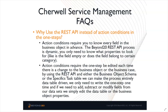At a recent ShareWell user group meeting, we encountered some frequently asked questions for this M App. The first question was: why use the REST API instead of action conditions in one-steps? Our answer is simple — action conditions require you to know every field in the business object in advance. With our REST API process, it's dynamic. You only need to know what properties to look for, such as whether the field is empty, belongs to a certain category or group, or has a certain value. The single one-step will process every field in the specifics object for you.